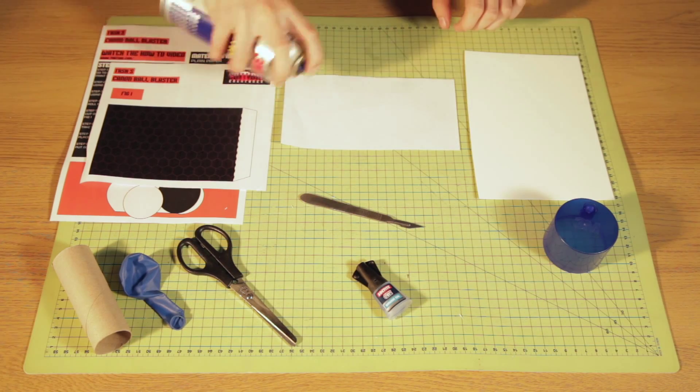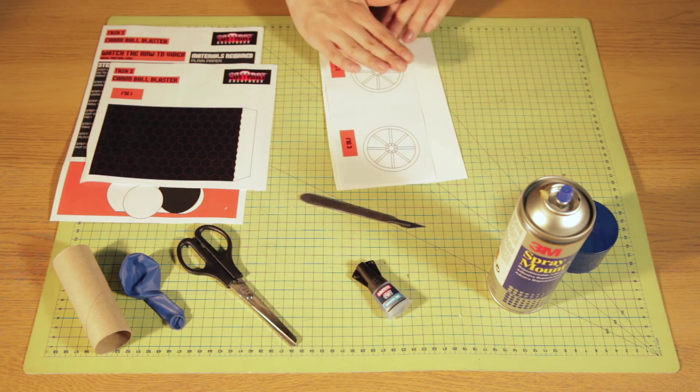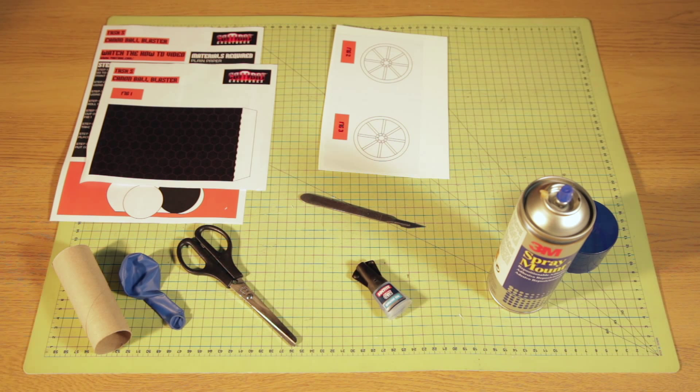Step 2. Now you've got the designs you need to cut your paper in half. Apply spray glue to the back of the section with wheels on and stick it to your card. We're using sheet card here, but an empty cereal box will do the job just fine.